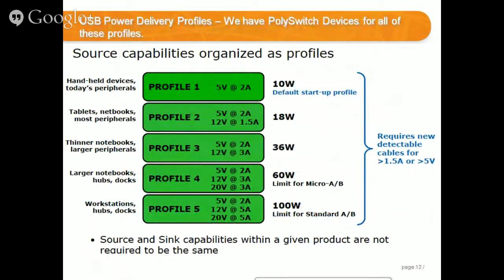The USB Power Delivery spec defines different profiles, the highest being Profile 5 at 100 watts — 20 volts and 5 amps. Lower profiles exist, like 5 volts and 2 amps, just a little more than USB 3. We do have PolySwitch devices that can work at 20 volts and 5 amps or lower currents and voltages — whatever you need — so we're ready to help customers designing to these specs.